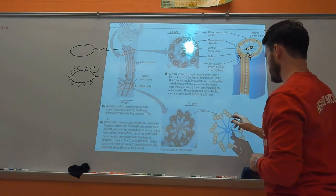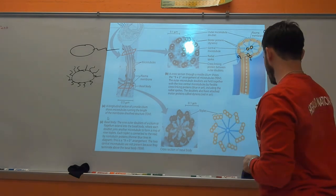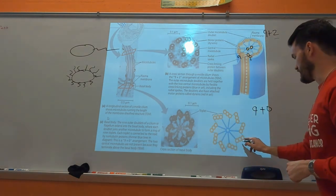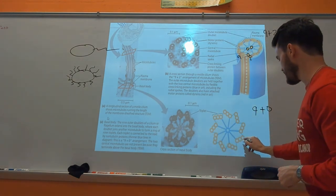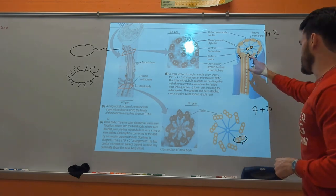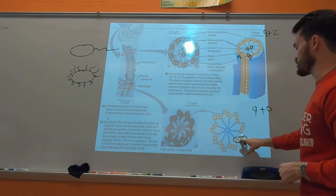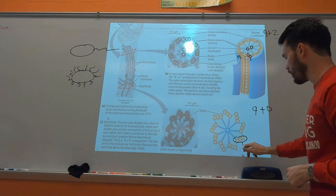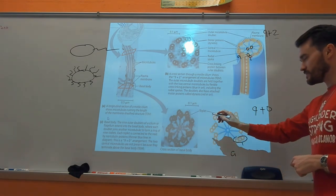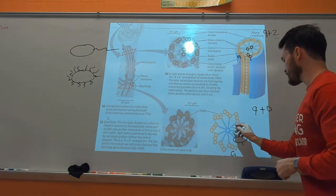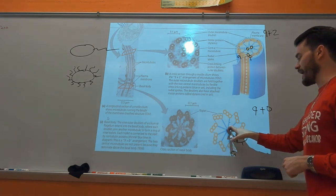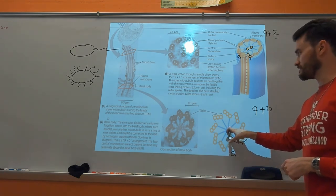The basal body - where the flagella or cilia anchor in the cell membrane - has a 9-plus-0 arrangement. The 9 comes from nine triplets, and 0 means there's nothing in the middle. So 9-plus-0 is for the basal body, while the main part of the flagella or cilia is 9-plus-2.